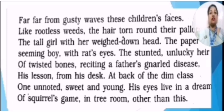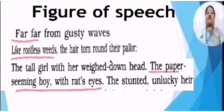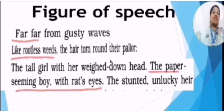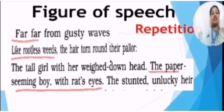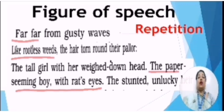Let's look at the literary devices used here. 'Far, far from gusty waves' — gusty waves represent the many changes going on in the world, or open areas like a big sea where these children are not allowed to go. They are deprived of nature also. The figure of speech used here is repetition. Repetition helps to stress upon a point, and the writer is emphasizing the great distance — how far they are from advancement and the changes going on around the world.